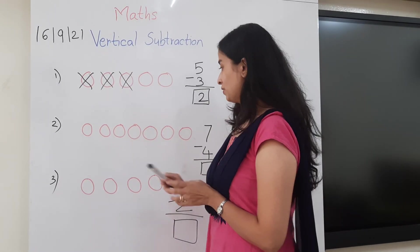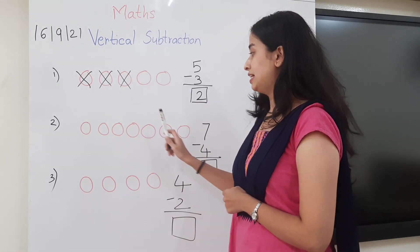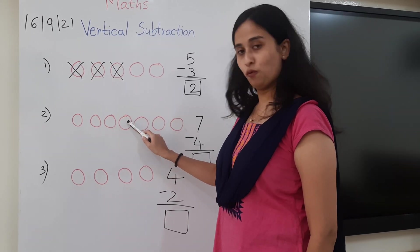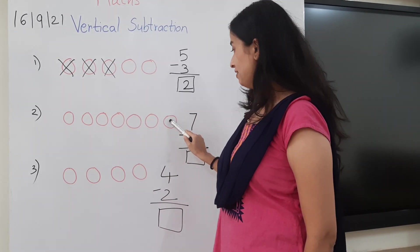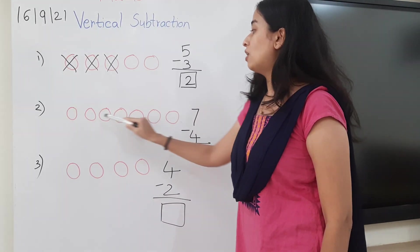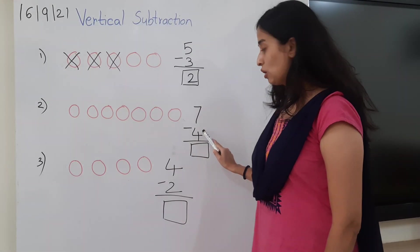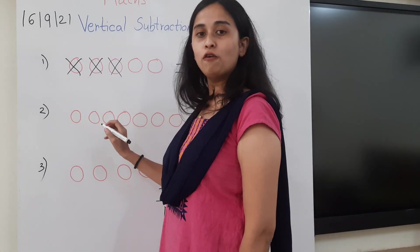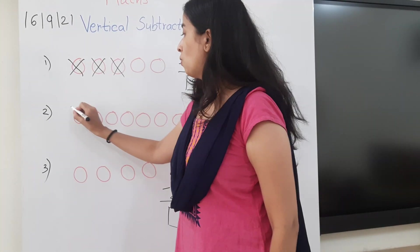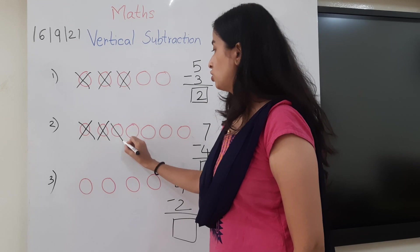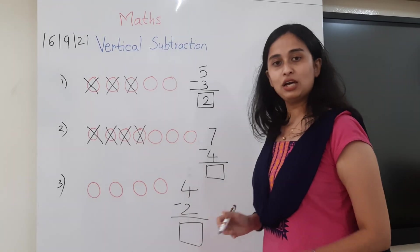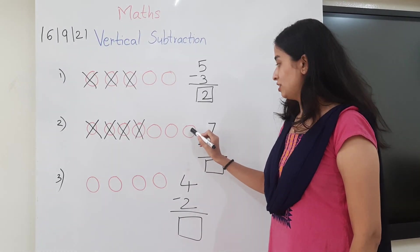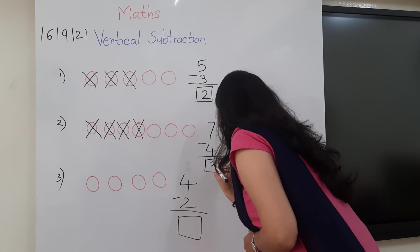Let us see the next example. Now how many beads do you see here? Let us count together: 1, 2, 3, 4, 5, 6 and 7. We have 7 beads here. Now out of these 7 beads, we have to take away 4 beads. So I will put a cross on 4 beads: 1, 2, 3 and 4. So now how many beads are left? 1, 2 and 3. The answer is 3.